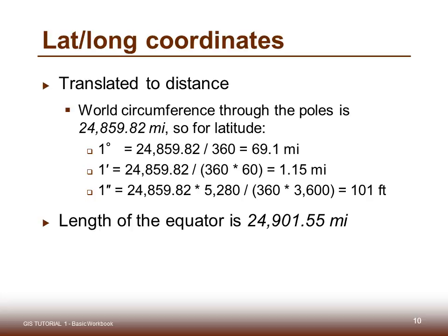Latitude-longitude coordinates translated to distances would look something like this. They take into account that the world's circumference through the poles is 24,859 miles, so for latitude it works out to about 69.1 miles for every degree. The length of the equator is 24,901 miles — just a little bit greater in circumference than the circumference going around the poles.